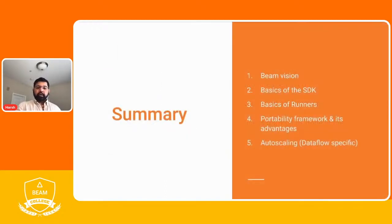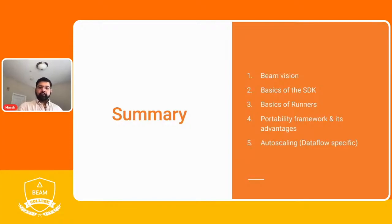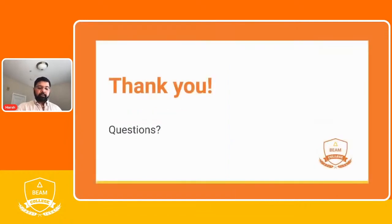In summary, we went over the Beam vision, the basics of SDKs and runners, how portability works, and some examples of advantages it provides including cross-language pipelines, splittable DoFns, and more. We also went into how some runners like Dataflow can take advantage of these features and implement things — such as auto-scaling and dynamic work rebalancing — that make execution better. Thank you, any questions?